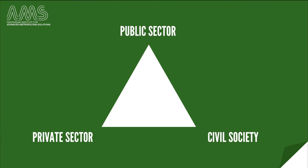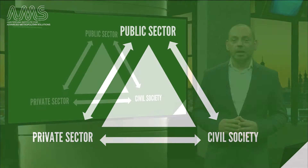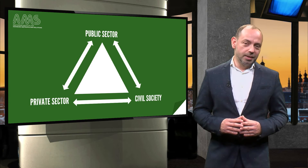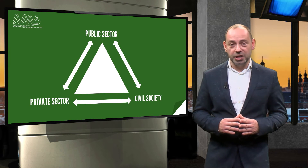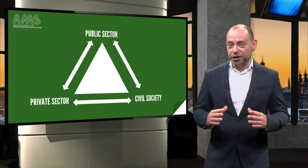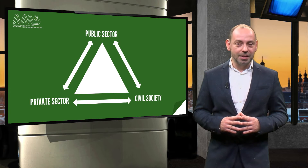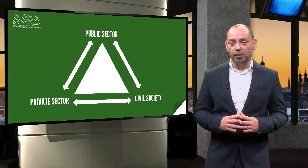Governance is defined as the architecture of interactions between three large sectors of society: the private sector and the public sector, the public sector and civil society, and civil society and the private sector. In liberal democracies, these large sectors are in positive tension with each other. This means that by applying pressure on one another, they produce checks and balances that keep each sector in line with societal needs.